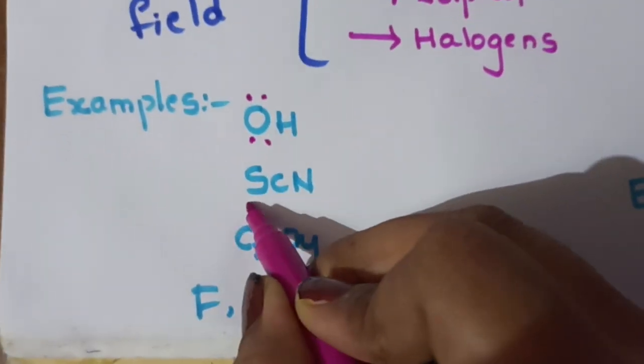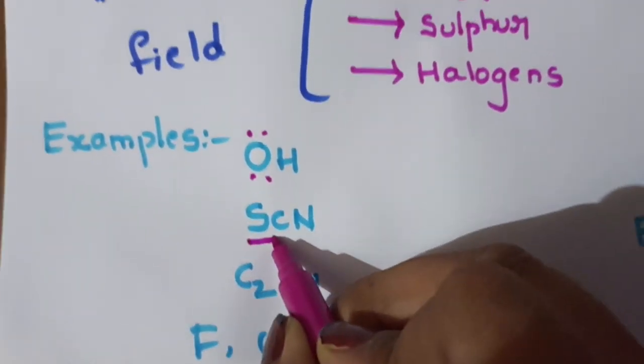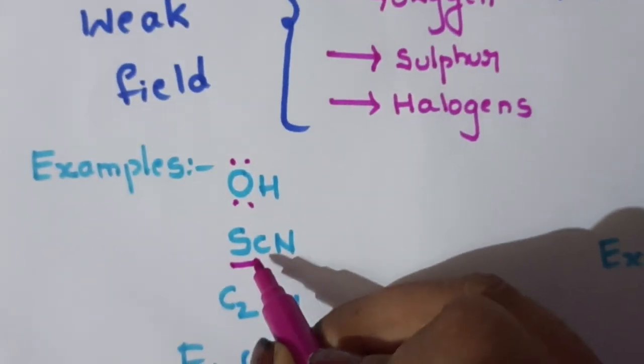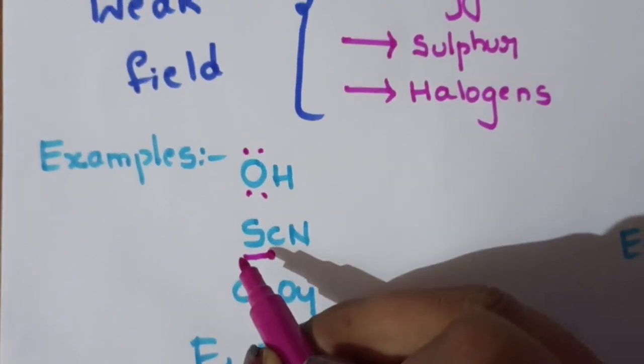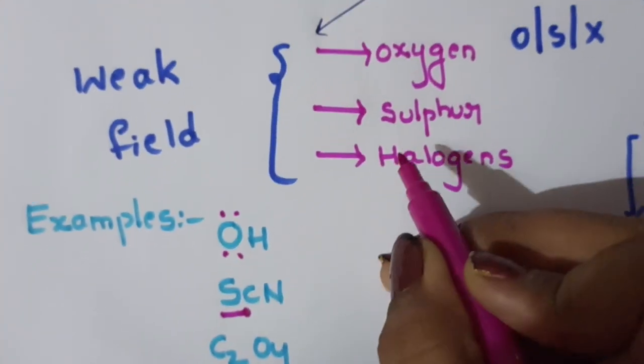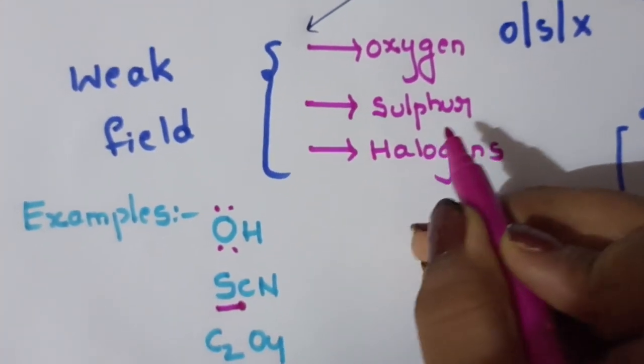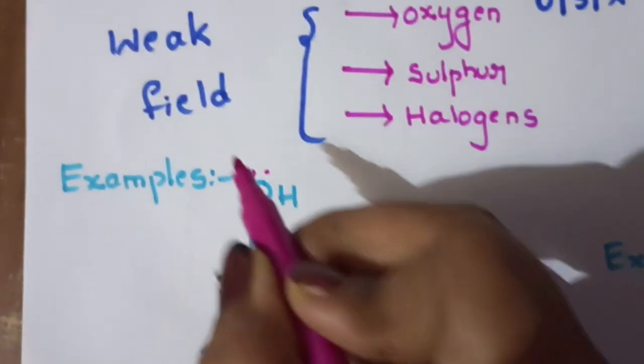Here the donor atom is Sulfur — this is thiocyanate. Sulfur donating atom is a weak field ion.